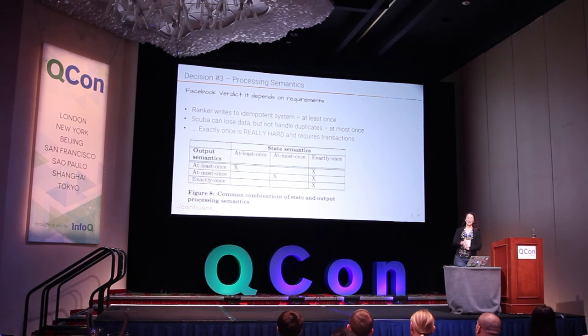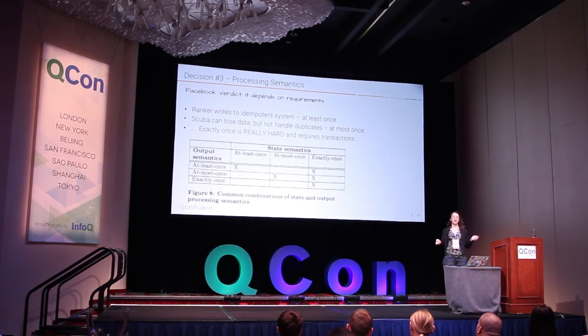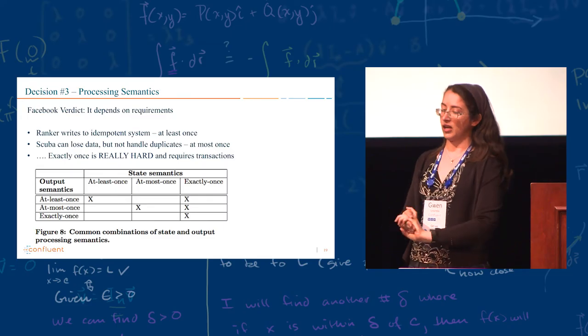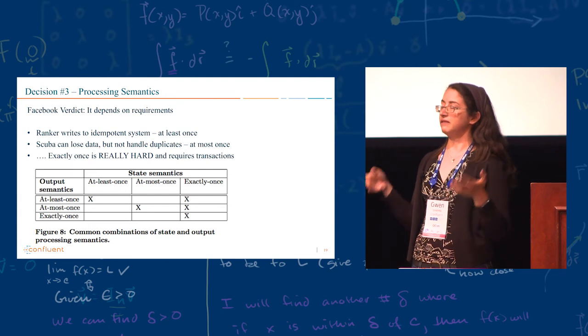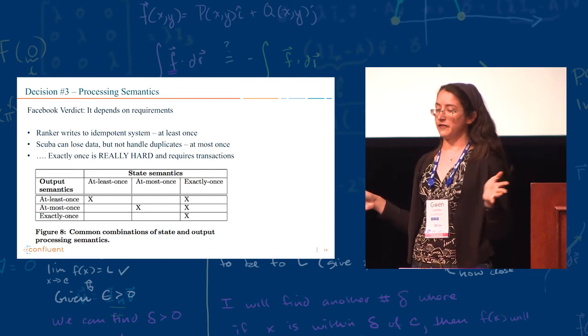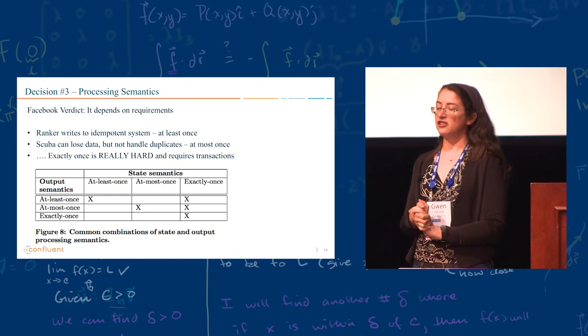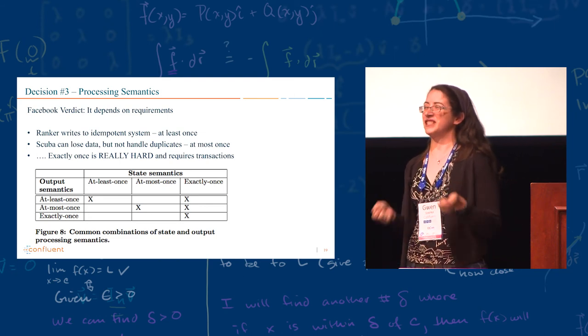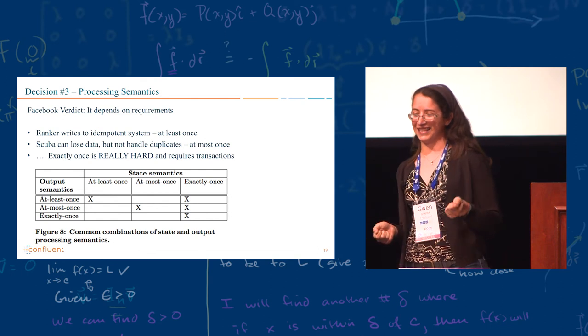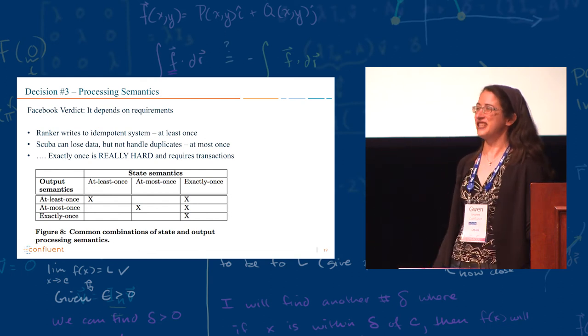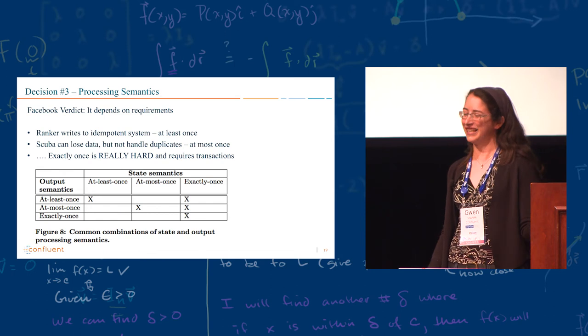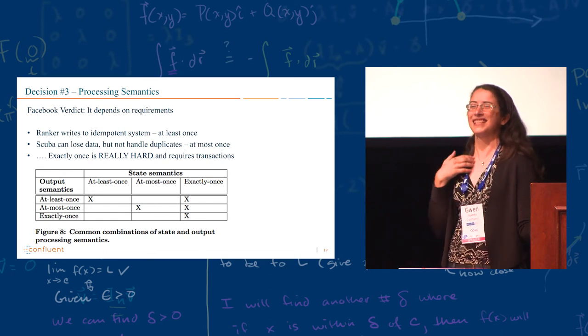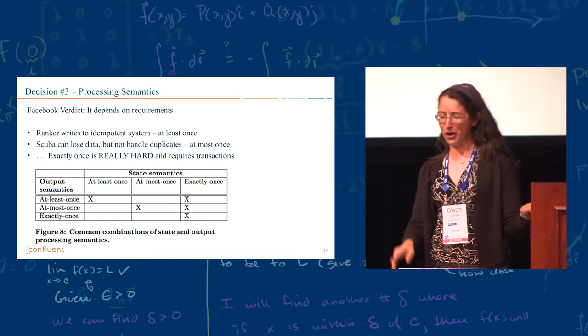Facebook, as usual, it depends. So they gave some examples. The ranker writes to an idempotent system, meaning that if you write duplicates, it's not going to matter. So going to be at least once. Scuba can lose data, but it doesn't handle duplicates very well. So that's going to be at most once. And it turns out that exactly once is really hard because they didn't have a single example for a system that did exactly once. People there are kind of nodding, yeah, we tried doing that. That's really freaking hard.